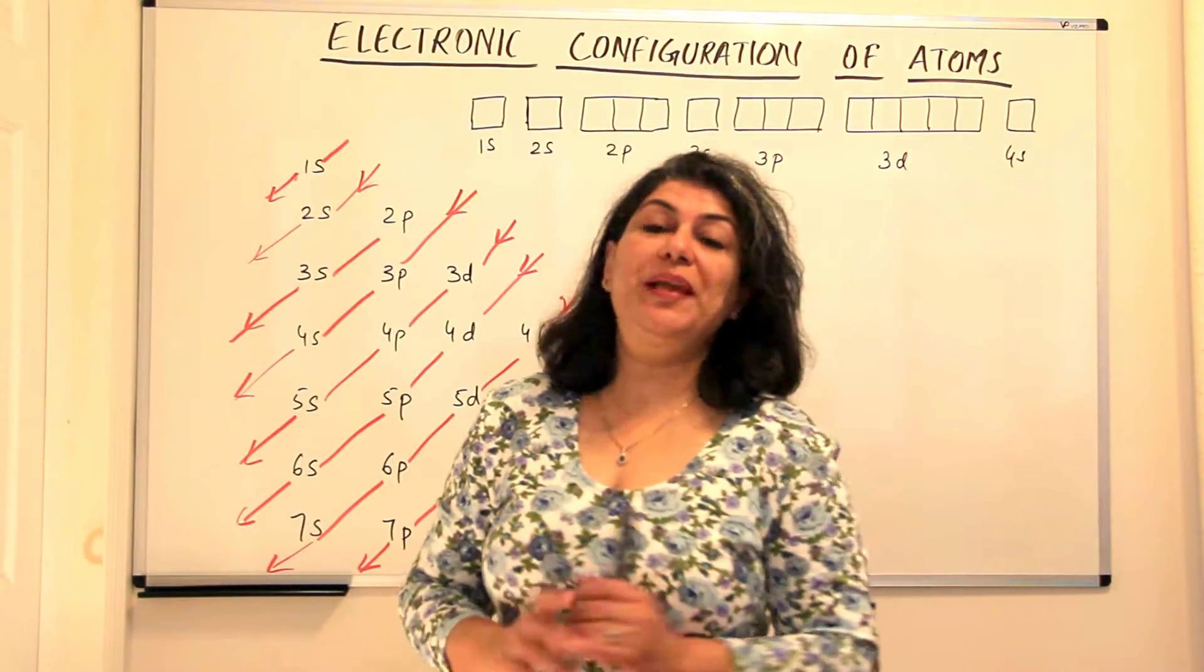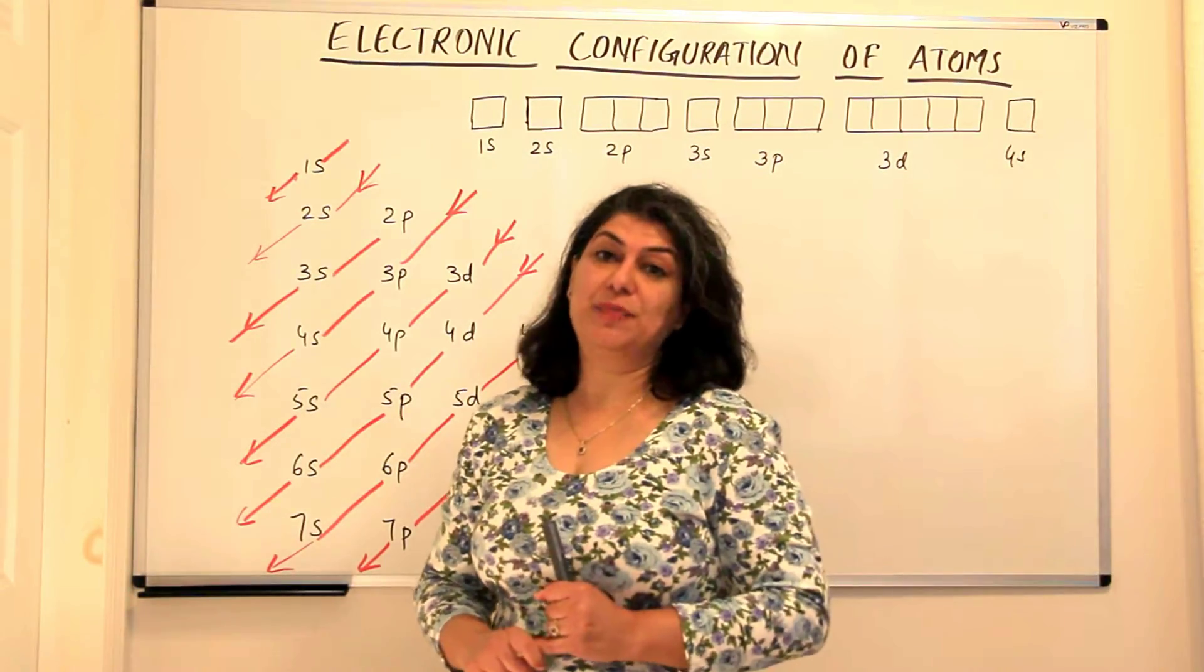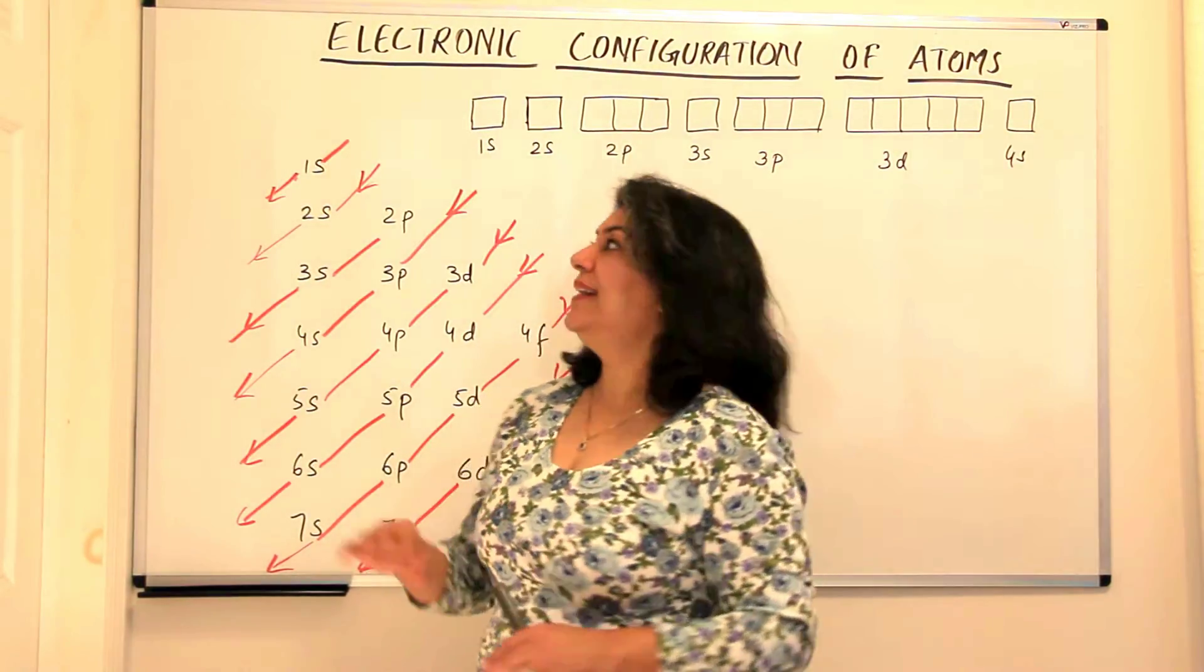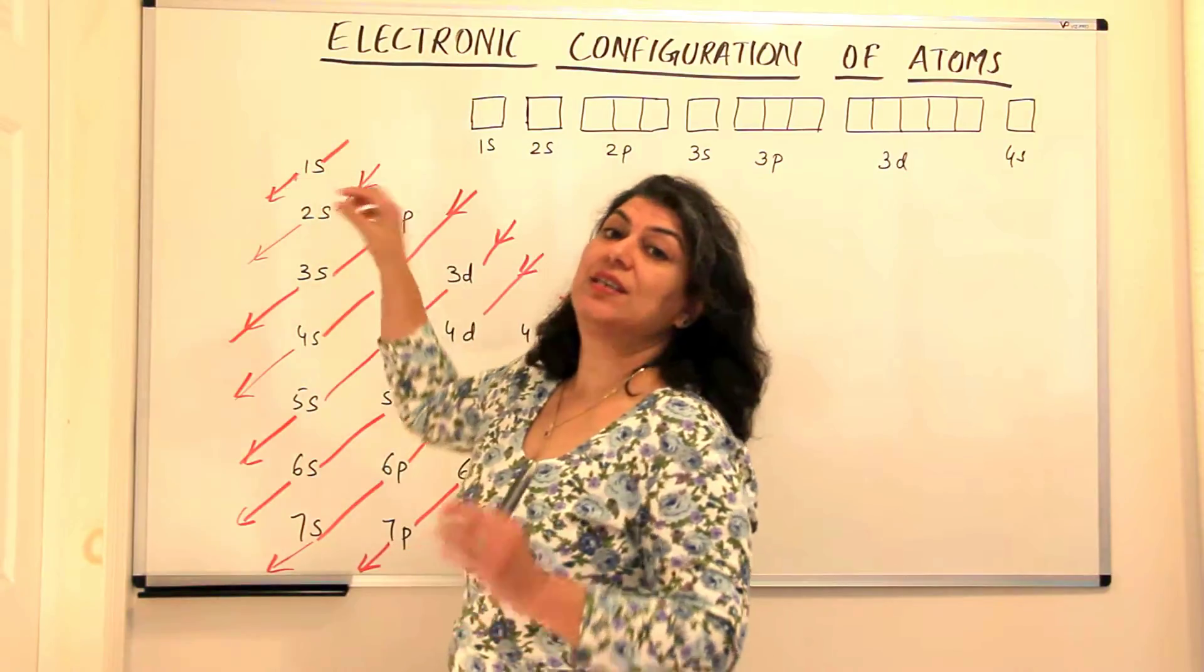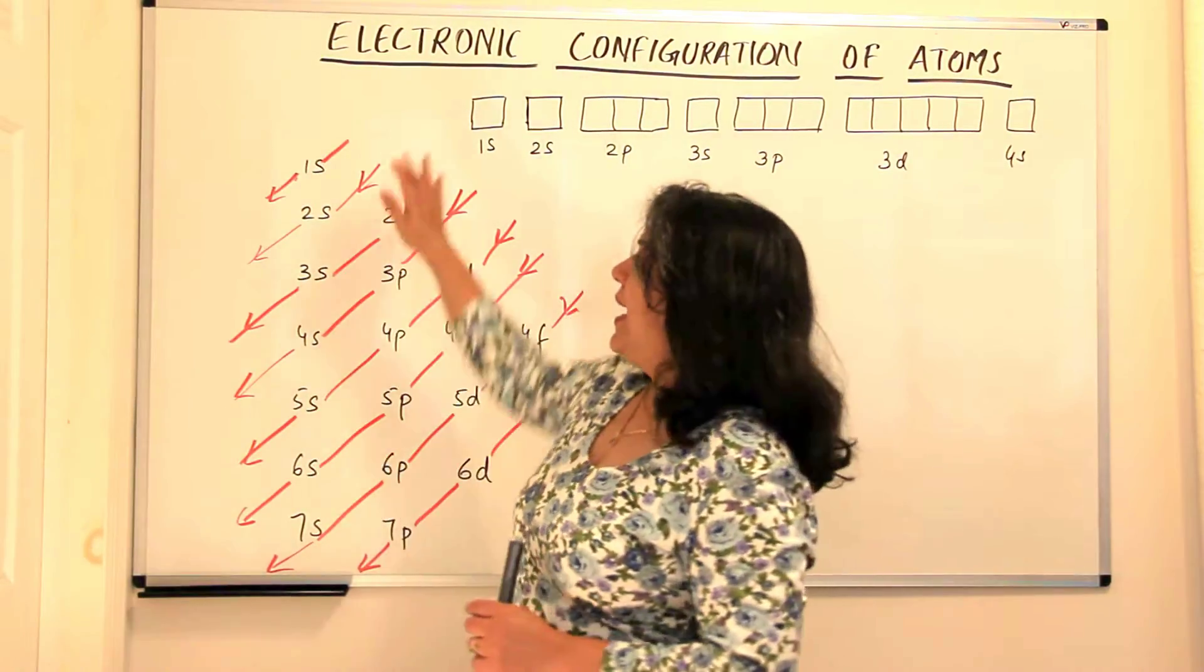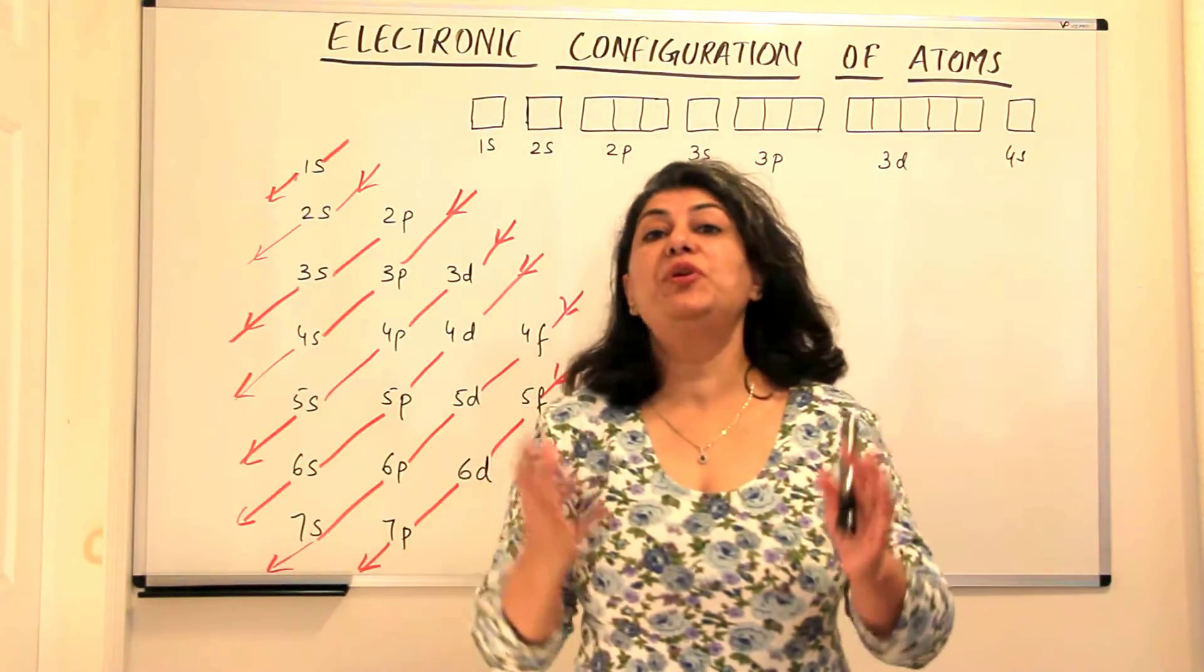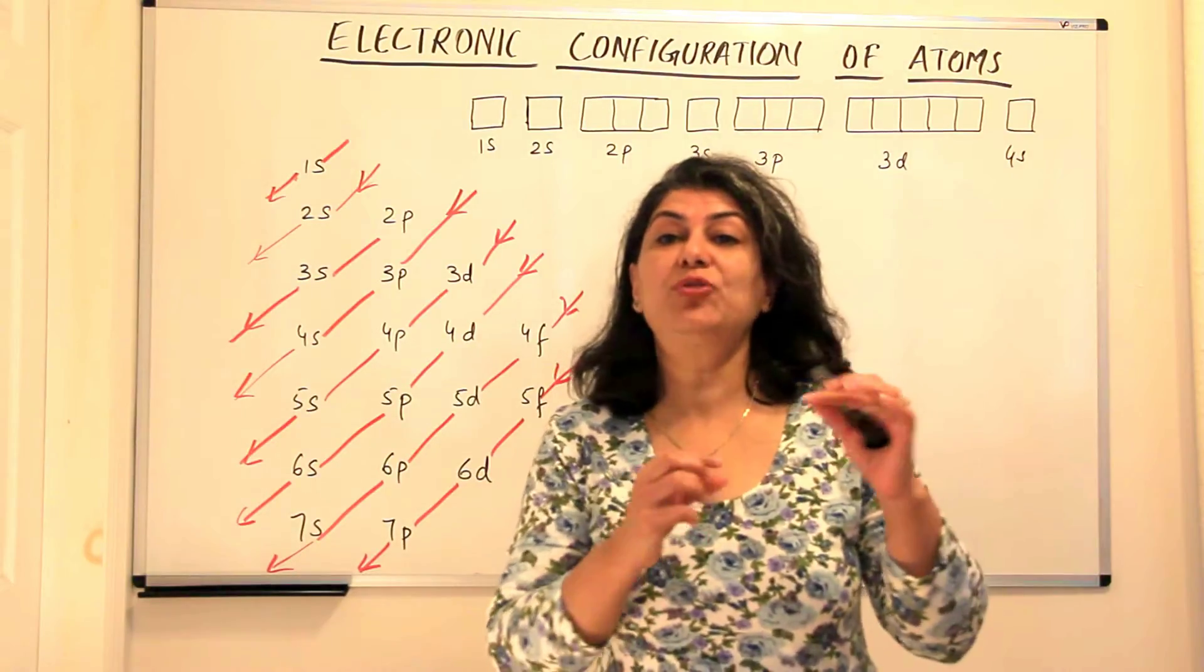In the previous video I explained to you the Hund's rule of maximum multiplicity, the Pauli exclusion principle and the Aufbau principle, and how they decide that when electrons fill up in an atom they first go to that orbital which has the lowest energy. The filling up takes place according to increasing energy of the orbitals, and I made this diagram to help you memorize the sequence of increasing energy. Now in this video I am going to teach you how the electrons of the first 30 elements are filled up in these orbitals.